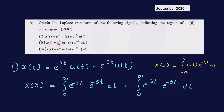Second signal: x(t) = e^(2t)u(-t) + e^(-3t)u(t). Third signal: x(t) = e^(2t)u(t) + e^(-3t)u(-t). Now, back to the first: x(t) = e^(-2t)u(t) + e^(-3t)u(t).